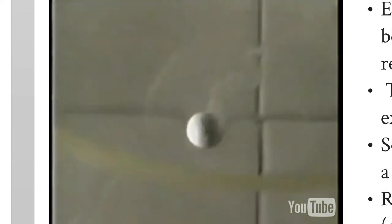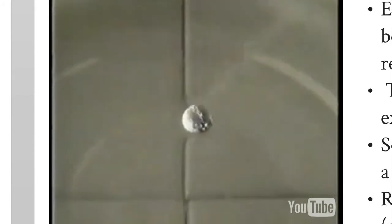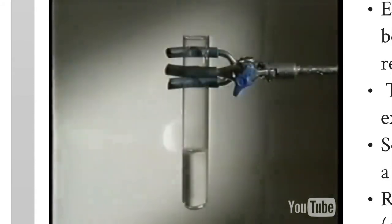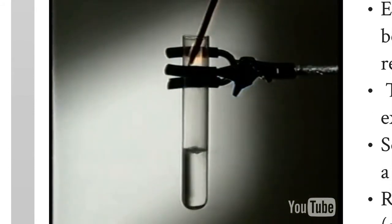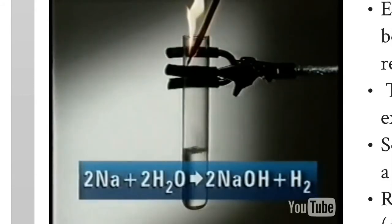So how does sodium react? Again it floats on the water and fizzes. The gas produced is hydrogen, and the solution is alkaline. When sodium reacts with water, sodium hydroxide and hydrogen are formed.